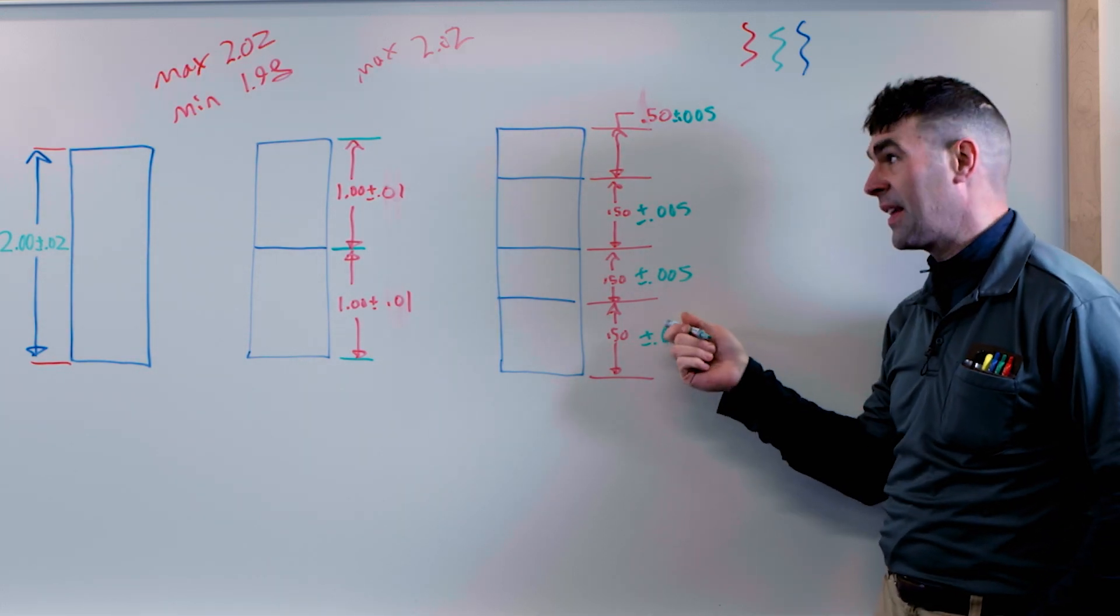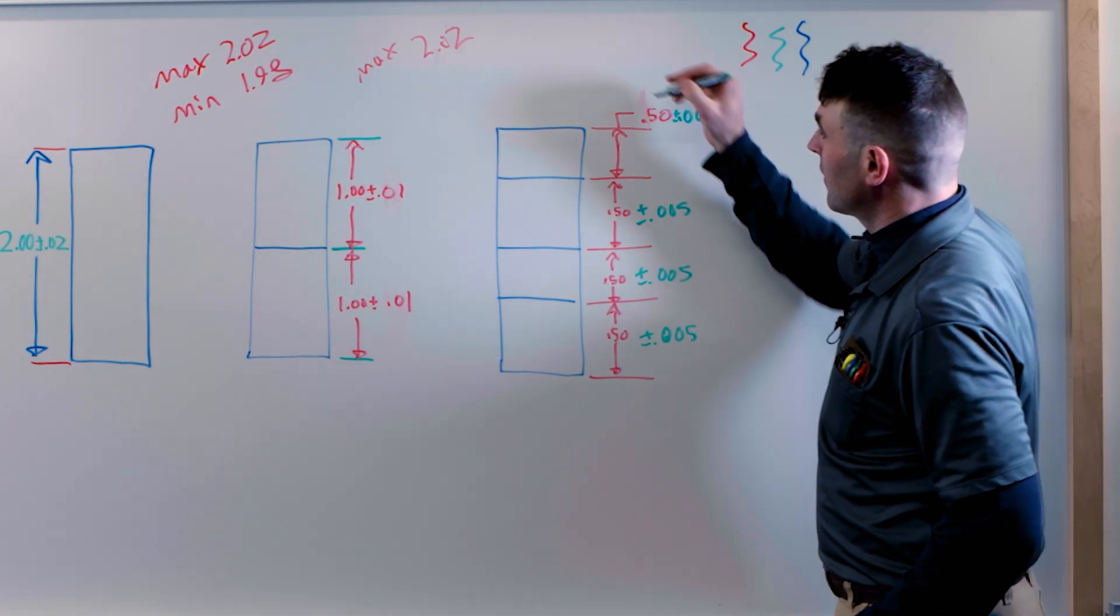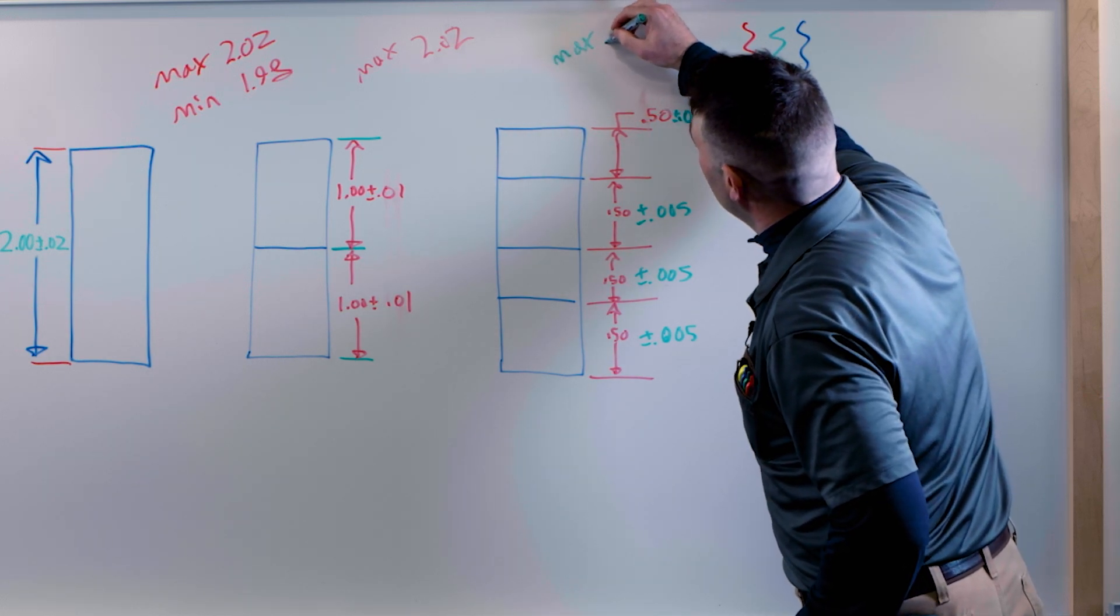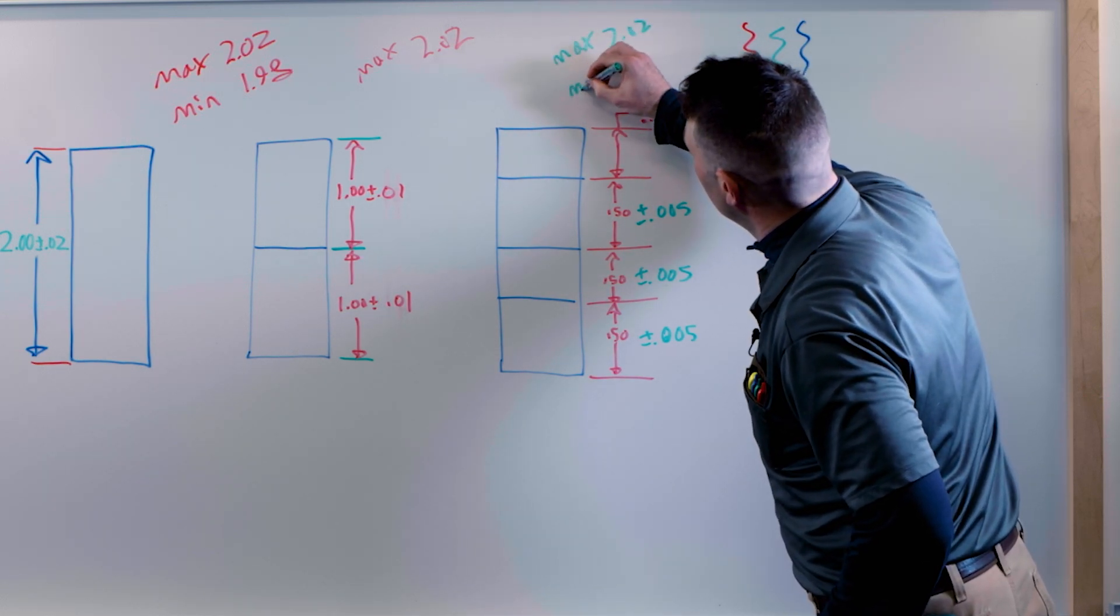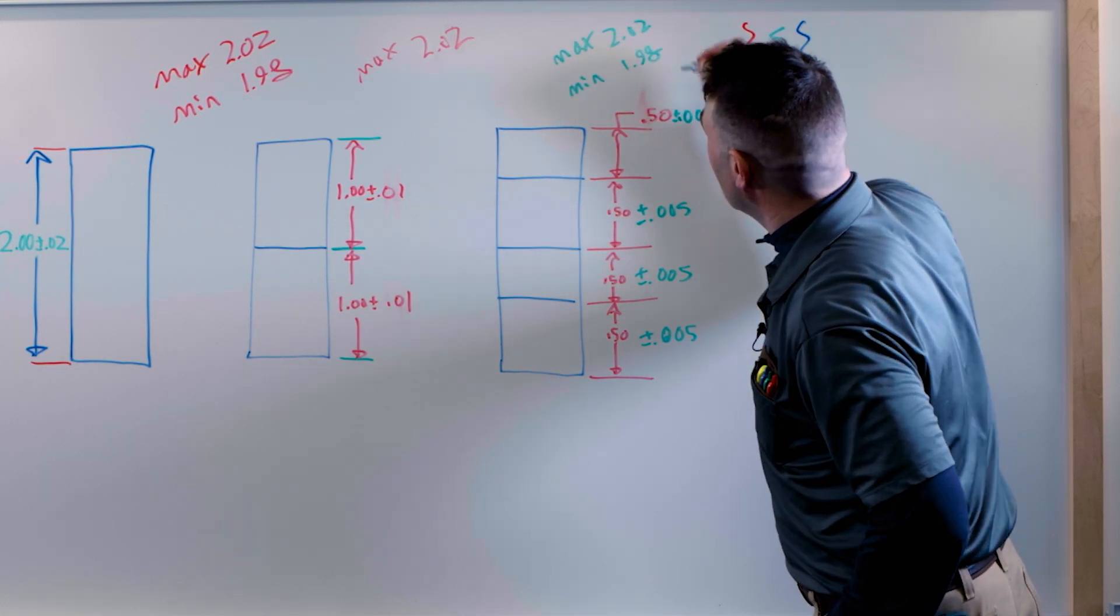So 10 thousandths, 20 thousandths. That's going to give us the max of 2.02 and the min of 1.98.